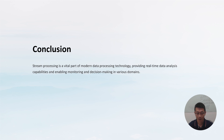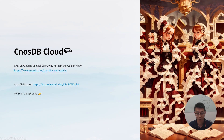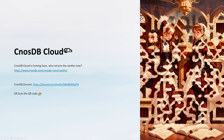In summary, stream processing is a vital part of modern data processing technology, providing real-time data analysis capabilities and enabling monitoring and decision-making in various domains. We would also like to share some great news: we have been working with AWS to deliver our database as a service offering — a fully managed cloud service with zero admin, global availability, and always-on features. KonosDB Cloud is open for everyone to use at KonosDB.cloud. You can also join our Discord channel to learn more. Thank you, see you next time.